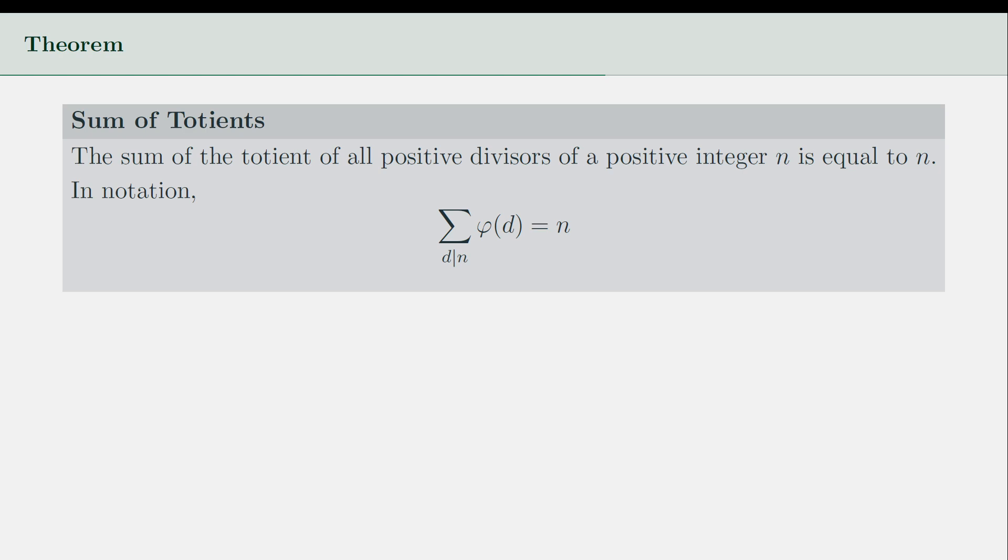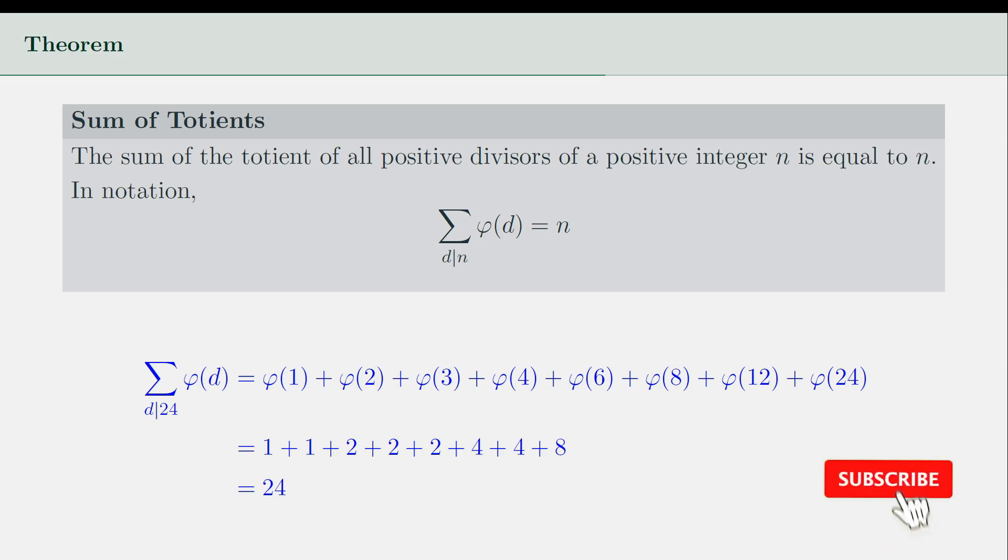In the meantime, I am deferring that discussion to a later date, and for the purposes of the problem at hand, let's assume this theorem to be true. Great minds before us have already proven this to be true, so don't worry much about it. Just as an illustration, note that the sum of the totient of all divisors of 24 is equal to 24.